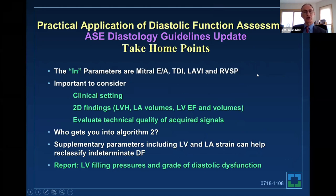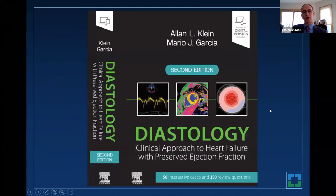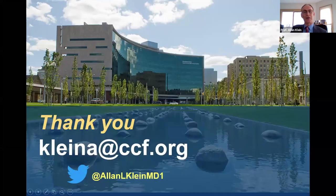In summary, the take-home points for diastolic function: the key parameters are EA ratio, tissue Doppler E primes, left atrial volume index, and RVSP. It's important to understand the clinical setting—know the history, what are the 2D findings, is there LVH? Emphasize technical quality of the signals. Understand who gets into the second algorithm with myocardial pathology. In the future, we should be using LV and LA strain to reclassify indeterminate cases. In your echo report, try to measure LV filling pressures and grade diastolic function. And if you didn't understand anything, you can buy the diastology book just published by Elsevier.